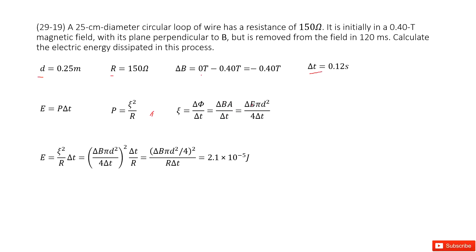The area A can be written as pi R squared, or equivalently pi times diameter squared divided by 4. Now you input R into the power formula P and then multiply by time delta T to get the electric energy. Then replace epsilon in the function and reorganize it. Input all the given quantities and you can get the answer.